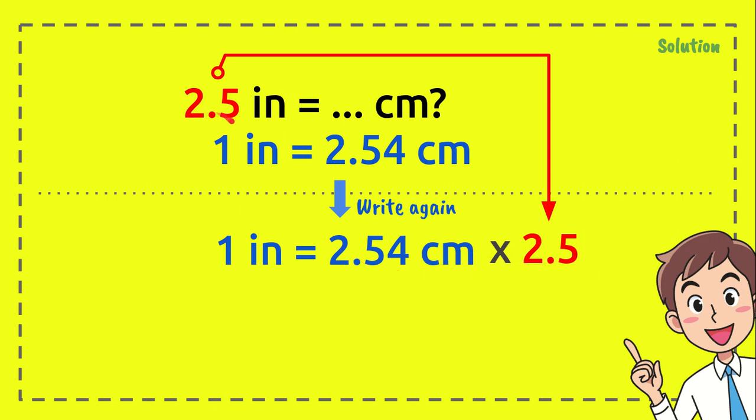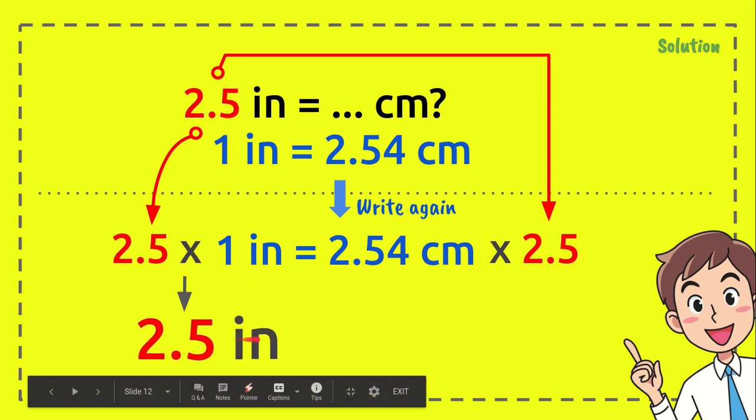Because we have it on the right, we must have it on the left as well. Now we have 2.5 times 1 inch equals 2.5 inches, just like what we have from the question.